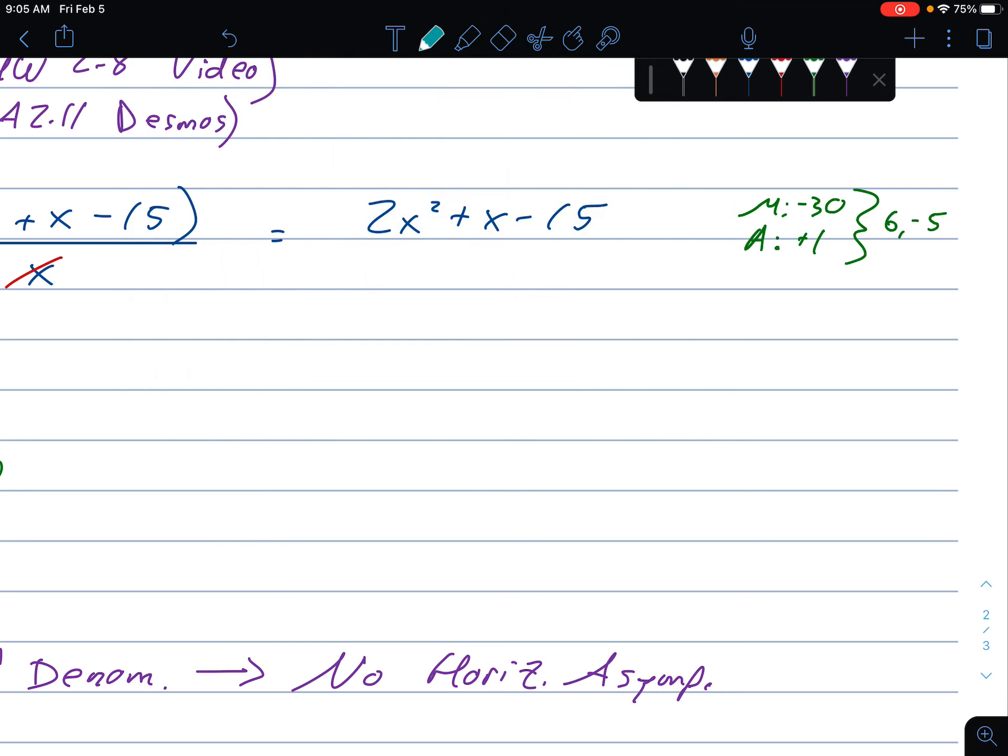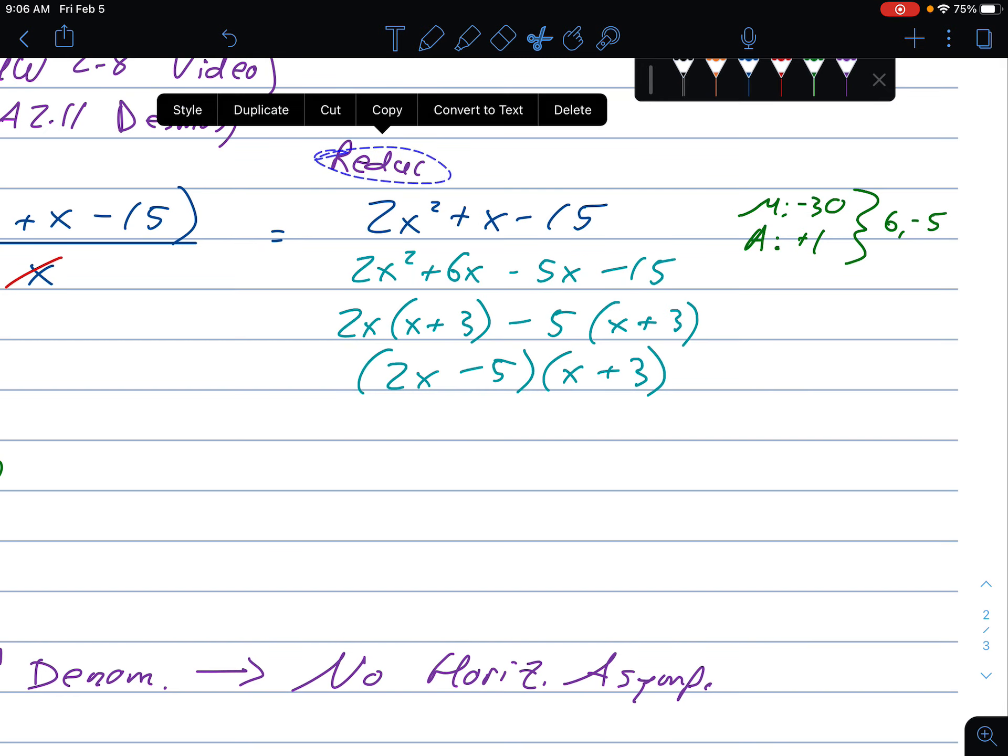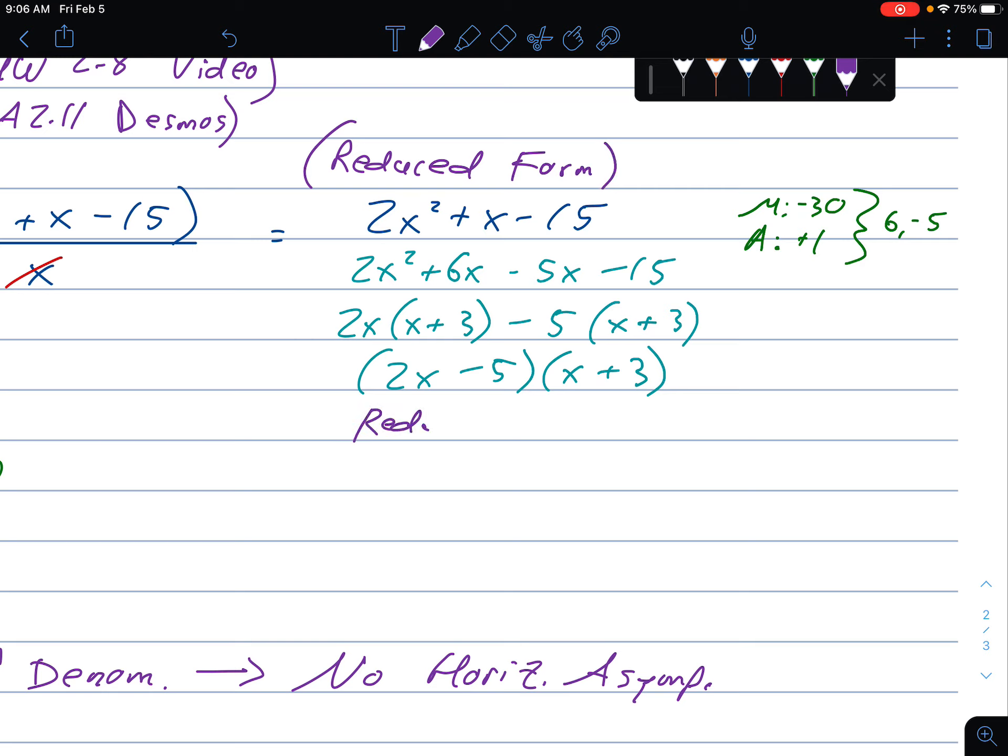So this is 2X squared. We put the 6 in front, the 5 in the back. GCF on the left-hand side, GCF on the right-hand side. 2X minus 5, X plus 3. And that factoring should be pretty straightforward for us. Since this is the reduced and factored form, this is your reduced form. And this is your reduced and factored form.